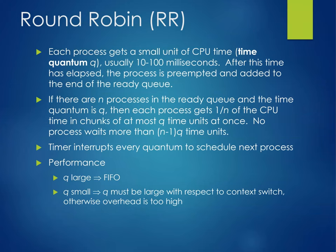Round robin: each process gets a small unit of CPU time — a quantum, usually 10 to 100 milliseconds. After this time has elapsed, the process is preempted and added to the end of the ready queue. If there are N processes in the ready queue and the time quantum is Q, then each process gets 1/N of the CPU time in chunks of at most Q time units. No process waits more than (N-1)×Q time units. The timer interrupts every quantum to schedule the next process. If Q is large, it becomes FIFO; if small, Q must be large with respect to context switch, otherwise the overhead is too high.